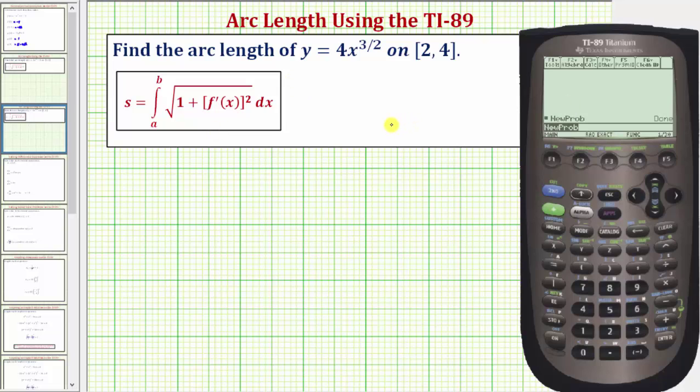From the home screen if we press F3 for the calculus menu, notice number 8 is arc length. So if we press 8 we would now enter 4x raised to the power of 3 halves, so 4x raised to the power of in parenthesis 3 divided by 2, comma the variable x. We went through arc length from x equals 2 to x equals 4, so now we enter comma 2 comma 4, close parenthesis, and enter.